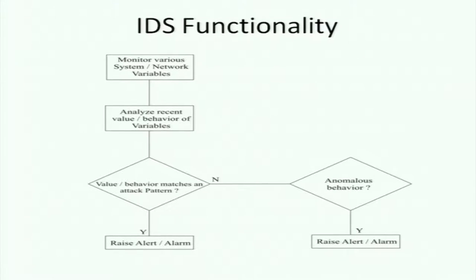There are two kinds of intrusion detection: anomaly detection and signature detection. For anomaly detection, you look for unusually high numbers of TCP packets coming in, or unusually high numbers of ARP response packets, and so on — and if so, raise an alarm. This is exactly what an IDS does.